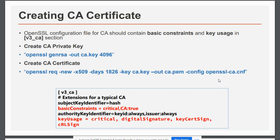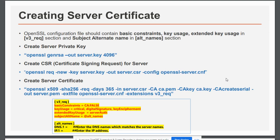Moving on to the second part — creating a server certificate — it is a three-step process. In the first step, similar to before, we create the server private key using the command 'openssl genrsa -out server.key 4096'. This creates a 4096-bit RSA key saved in the server.key file.